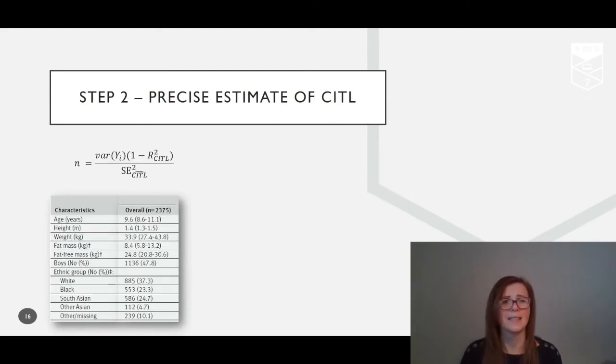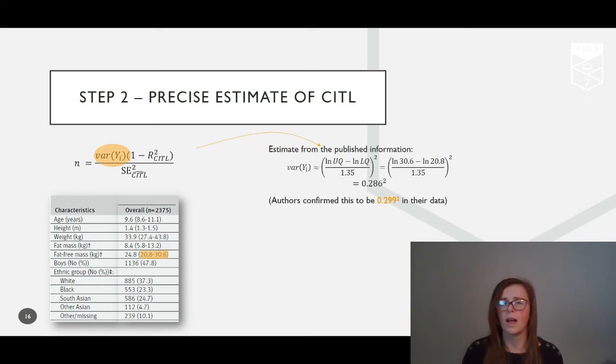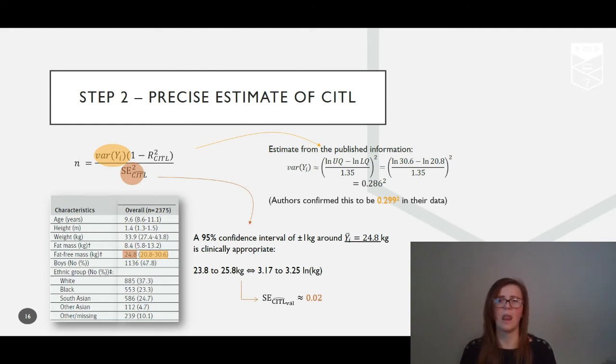Next, to ensure precise estimation of calibration in the large, first we require the anticipated variance of the outcome values in the target population. Huda reports the quartile values for fat-free mass in their development dataset, so by transforming this to the log kilogram scale and assuming that log fat-free mass values are approximately normally distributed, we can derive an estimate for the variance in the log fat-free mass in the development population. The precision required to estimate calibration in the large needs to be placed in the context of the mean outcome value in the population and is likely to be highly dependent on the outcome that you're predicting. So considering the original scale here, an accuracy of approximately plus or minus one kilogram around the estimate seems reasonably precise.